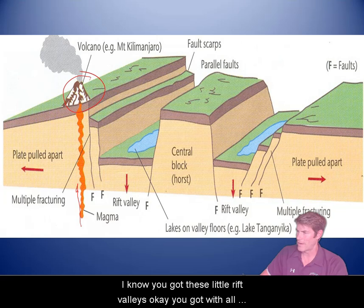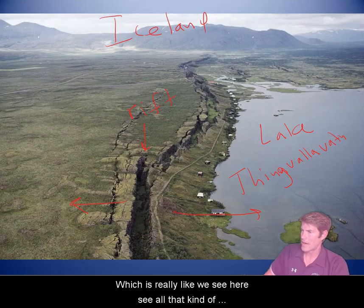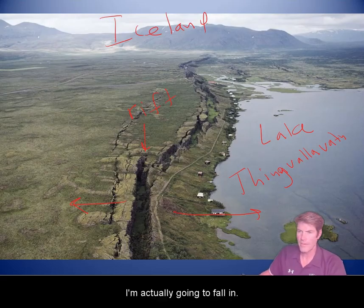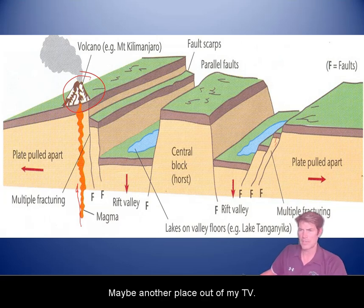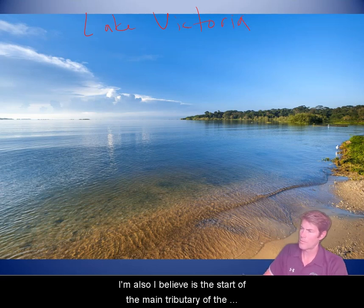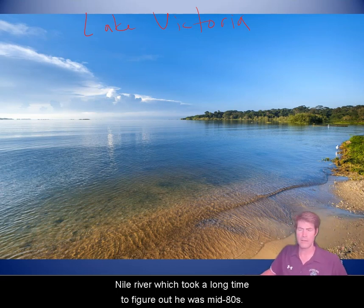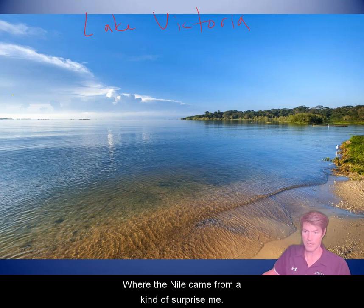These blocks are sitting there as the plates pull apart, creating little rift valleys. With all this fracturing of the rock, it eventually falls in, and you can see the lakes on the valley floors. That'd be another place I'd like to visit. Lake Victoria is also believed to be the start of the main tributary of the Nile River — they finally figured that out in the mid-1800s.